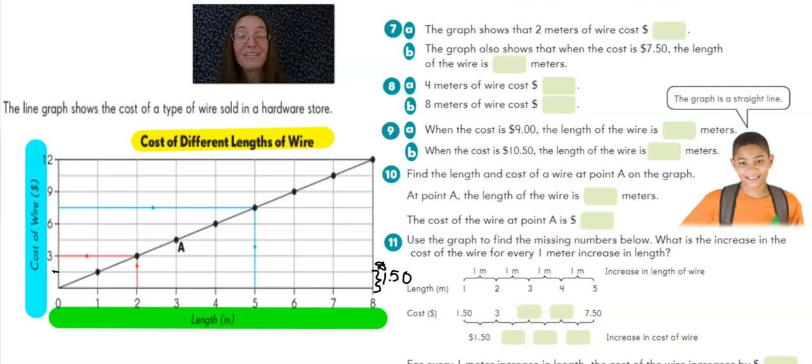Now that we've taken a moment to understand the graph, let's try answering some questions about it. In question number seven, it says the graph shows that two meters of wire cost a certain amount of dollars. Here's two meters on the meter axis. And if we go up to the point where it intersects with the y axis and come over, we see that two meters of wire cost three dollars. The graph also shows that when the cost is seven dollars and fifty cents, the length of the wire is blank meters. Well, seven dollars and fifty cents is a dollar fifty more than six. So I say that it's right in this spot. And if we follow this line horizontally over and then drop it down vertically, we can see that the length of meters you can get for seven dollars and fifty cents is five meters.